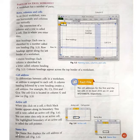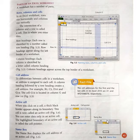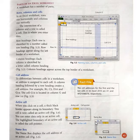Next is name box. The name box displays the cell address of the active cell. In the name box, you can see the cell address of the current active cell, and you can only type in an active cell.